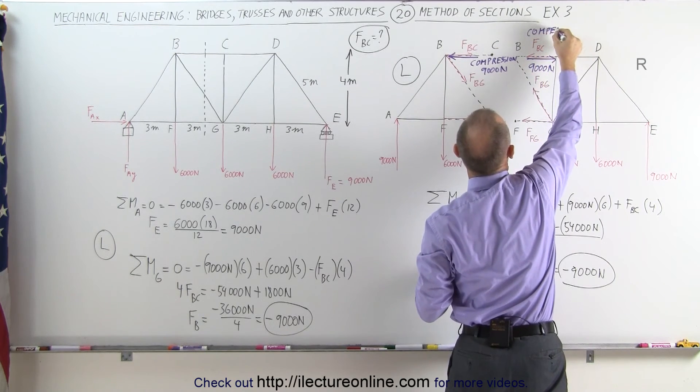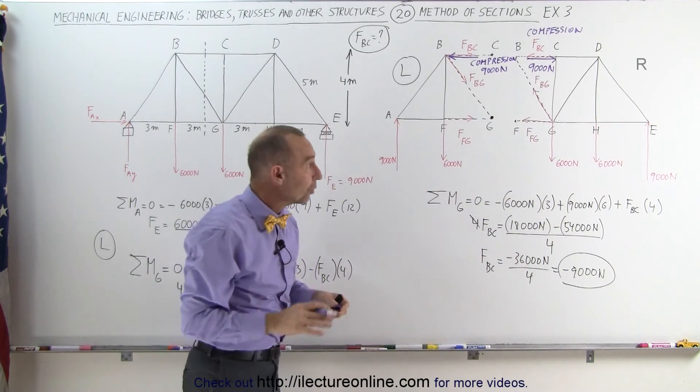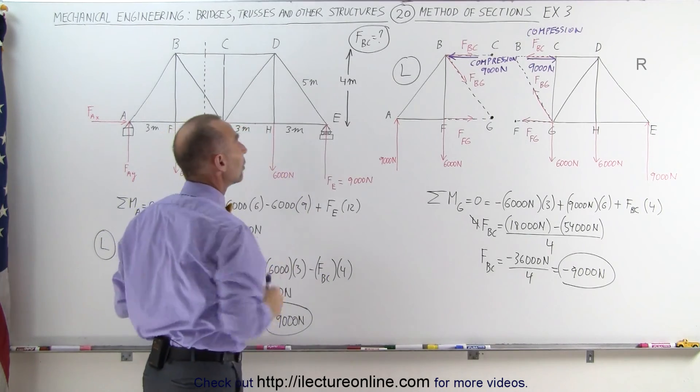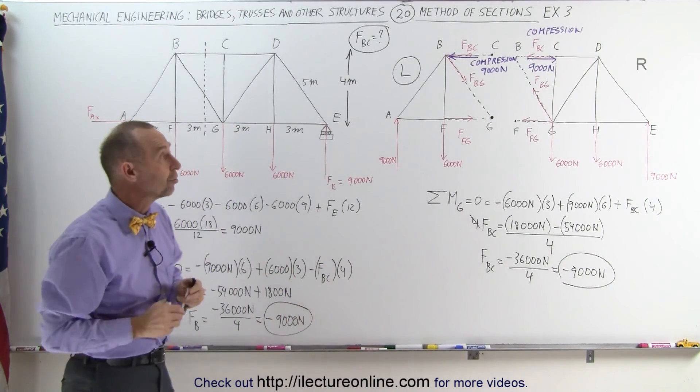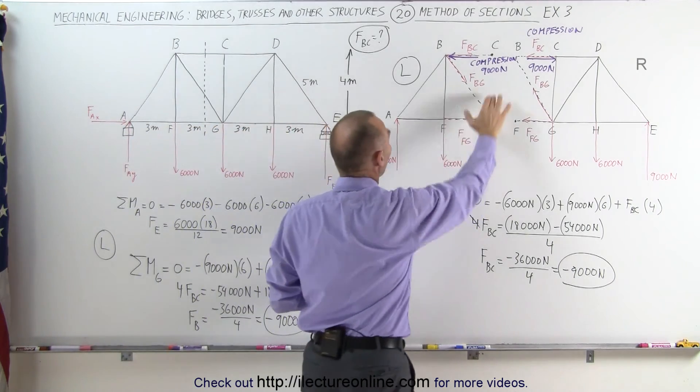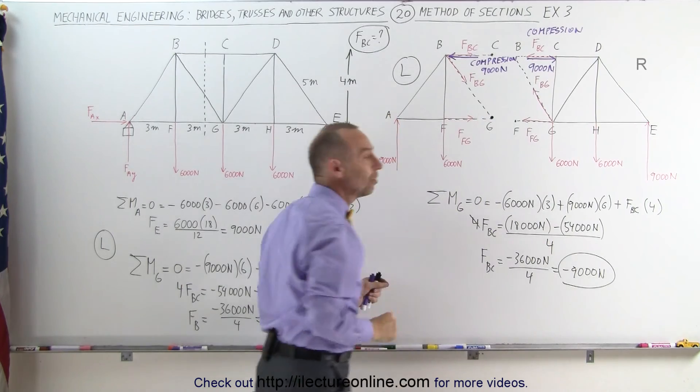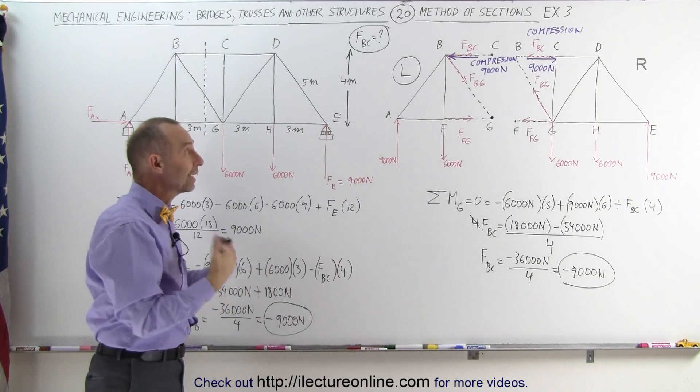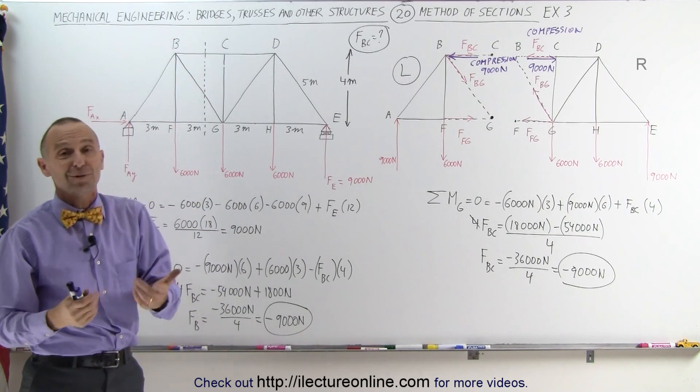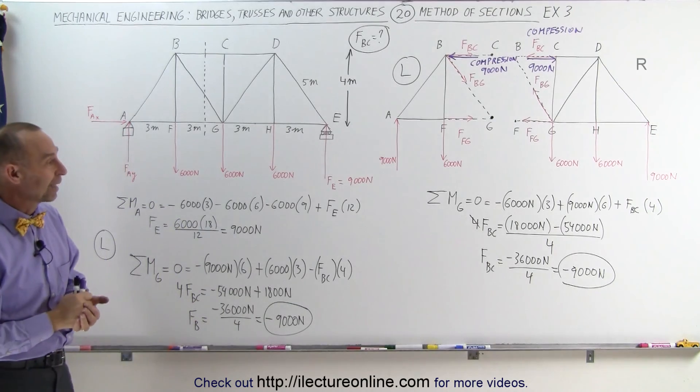We can see now we get the exact same answer in both cases, either using the left side or the right side of the bridge, the left section or the right section. And we can do that for every member on the bridge. It doesn't matter which section of the bridge you use, simply take the section in isolation, look at all the forces acting on that section, and then pick strategic points about which to find the moment to calculate the unknown forces on the known members. And that's how we work with the section method.